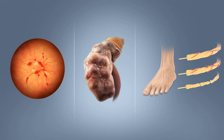Type 2 diabetes is characterized by insulin resistance, which may be combined with relatively reduced insulin secretion. The defective responsiveness of body tissues to insulin is believed to involve the insulin receptor. Type 2 diabetes is the most common type of diabetes mellitus. Many people with type 2 diabetes have evidence of prediabetes, impaired fasting glucose and/or impaired glucose tolerance, for many years before meeting the criteria for type 2 diabetes. Pre-diabetes and early overt type 2 diabetes can be reversed by a variety of measures and medications that improve insulin sensitivity or reduce the liver's glucose production.